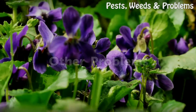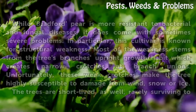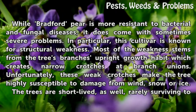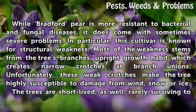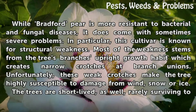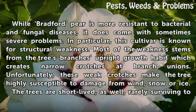While Bradford pear is more resistant to bacterial and fungal diseases, it does come with sometimes severe problems. In particular, this cultivar is known for structural weakness. Most of the weakness stems from the tree's branches' upright growth habit which creates narrow crotches at branch unions. Unfortunately, these weak crotches make the tree highly susceptible to damage from wind, snow or ice.